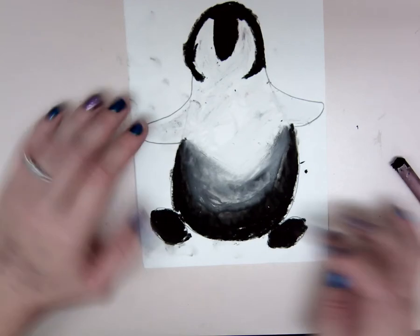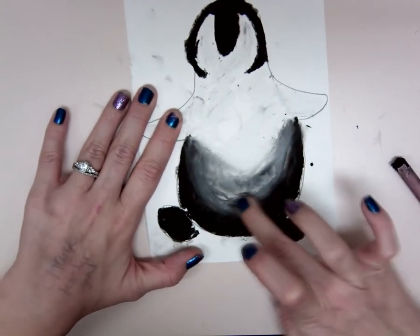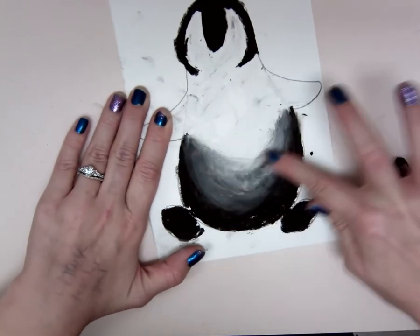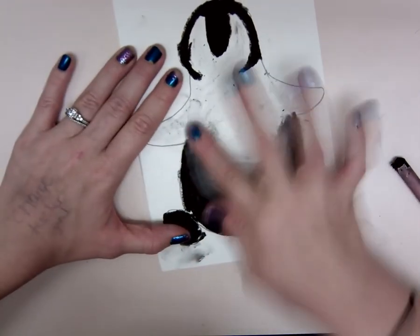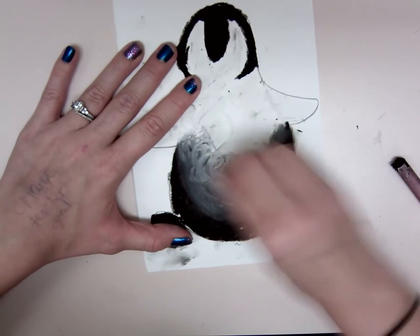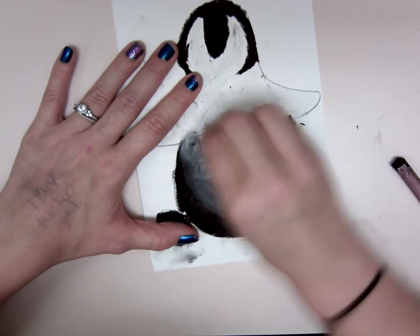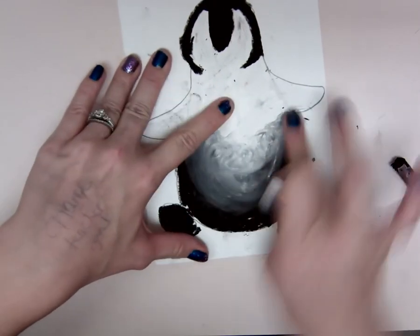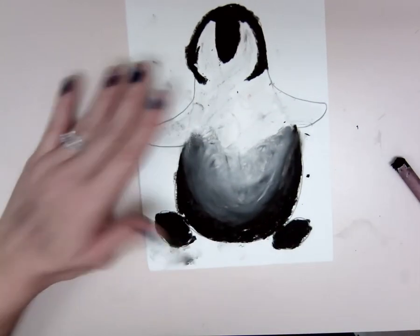So when you zoom out, now you've got this gray value that you've created with black and white. Once you've smeared it and you like how it looks, then you can be done. You kind of decide how much smearing you want to do or not. It's up to you. So this is the only place where you're going to smear and then we'll add some eyes and a beak.